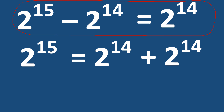For the first proof, if we make 2 raised to the power of 15 the subject of the formula, we take the minus 2 raised to the power of 14 to the right-hand side. It crosses the equality sign and becomes plus 2 raised to the power of 14. Since there is already a 2 raised to the power of 14 on the right, adding the two gives us: 2 raised to the power of 15 equals 2 raised to the power of 14 plus 2 raised to the power of 14.